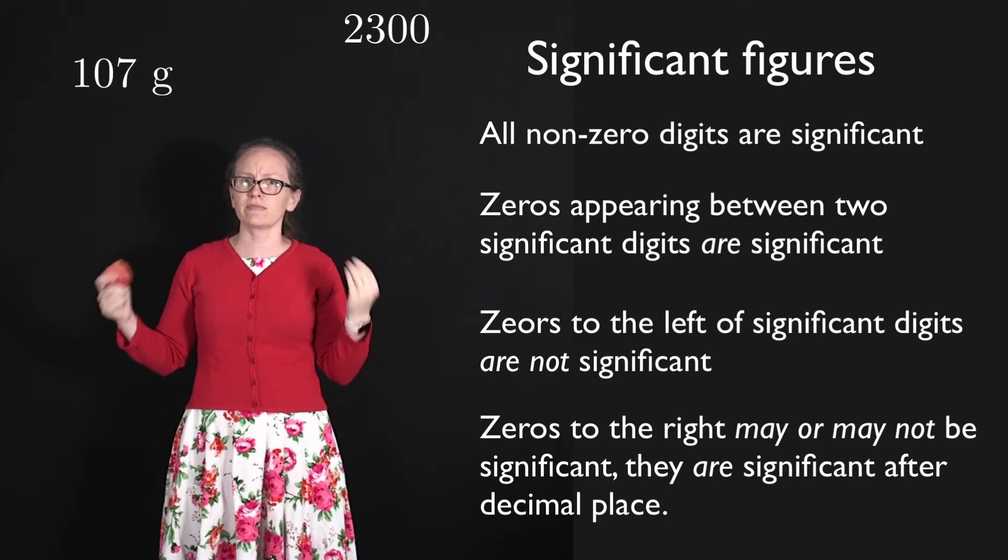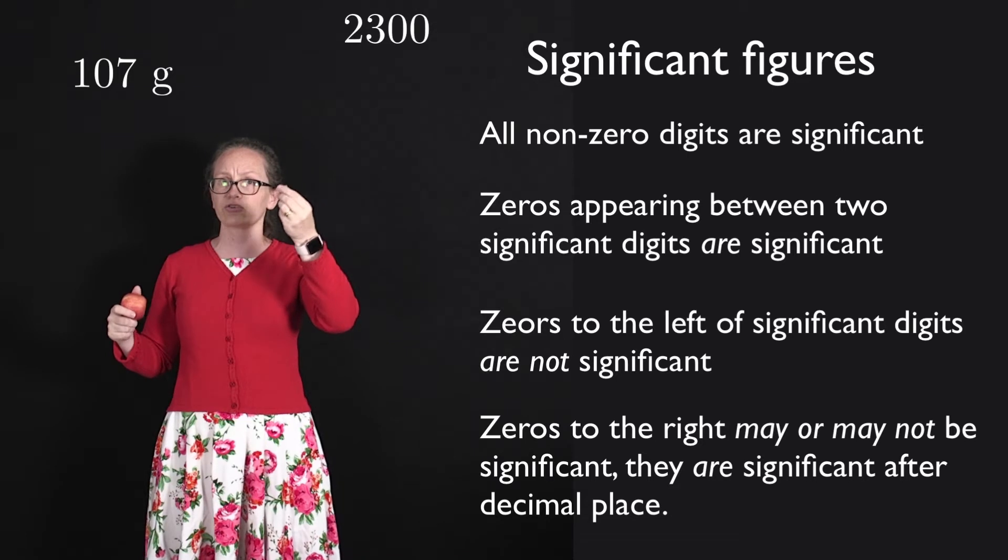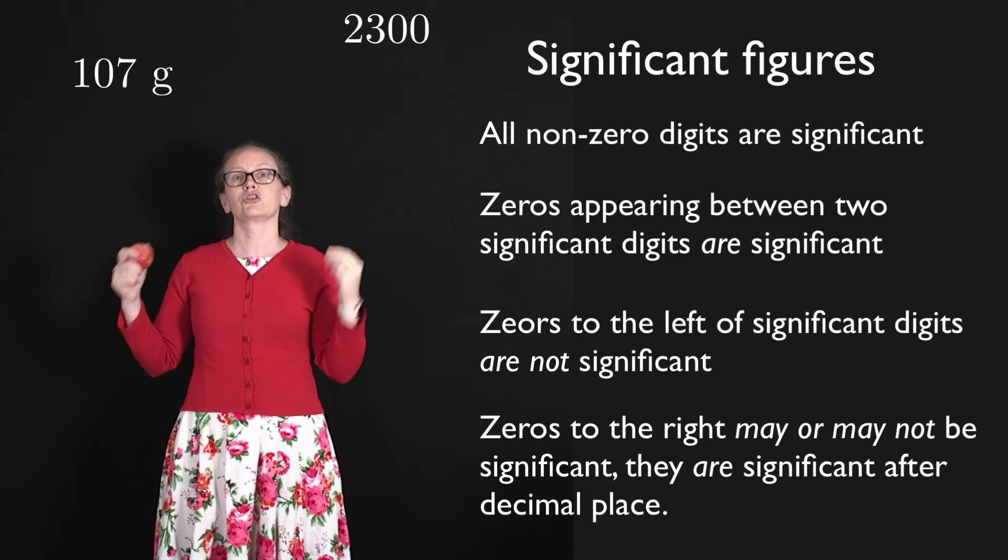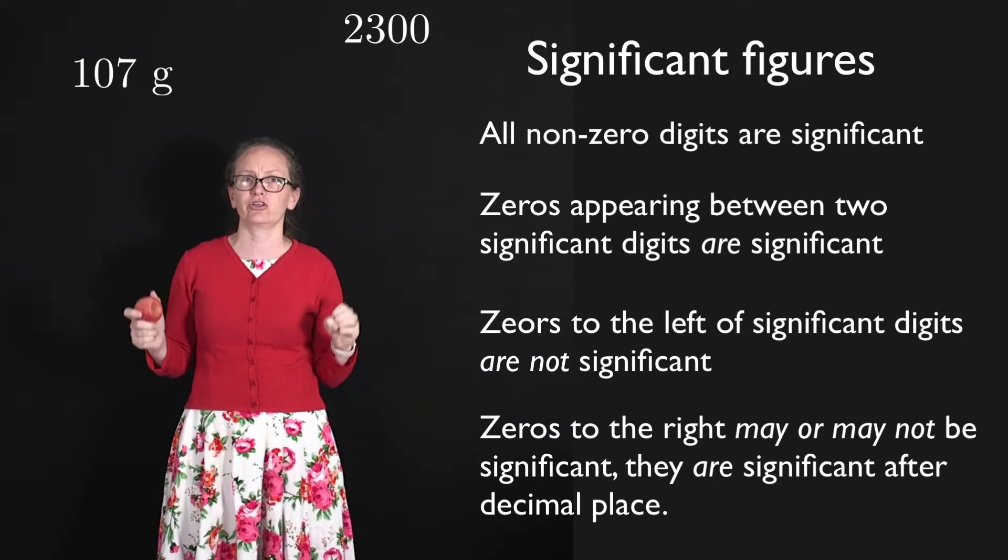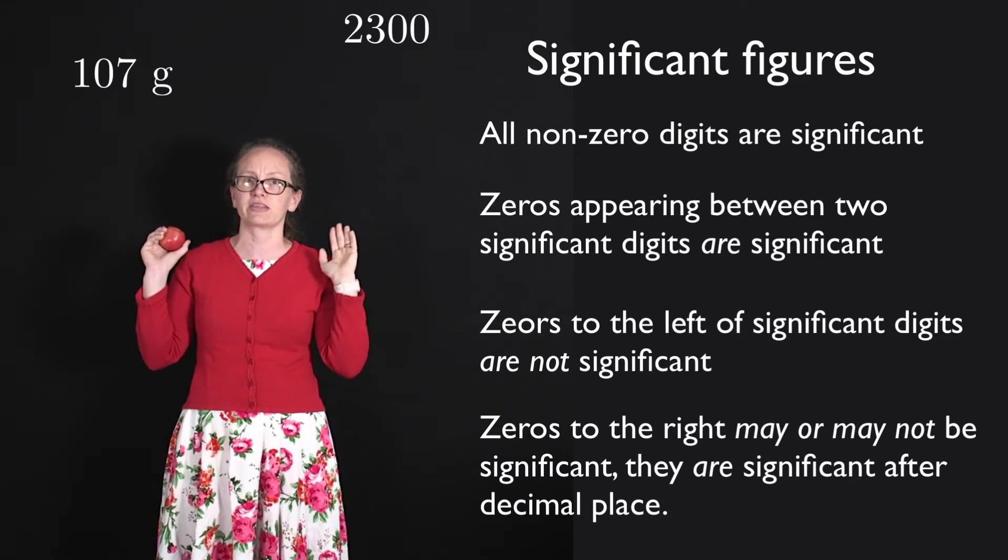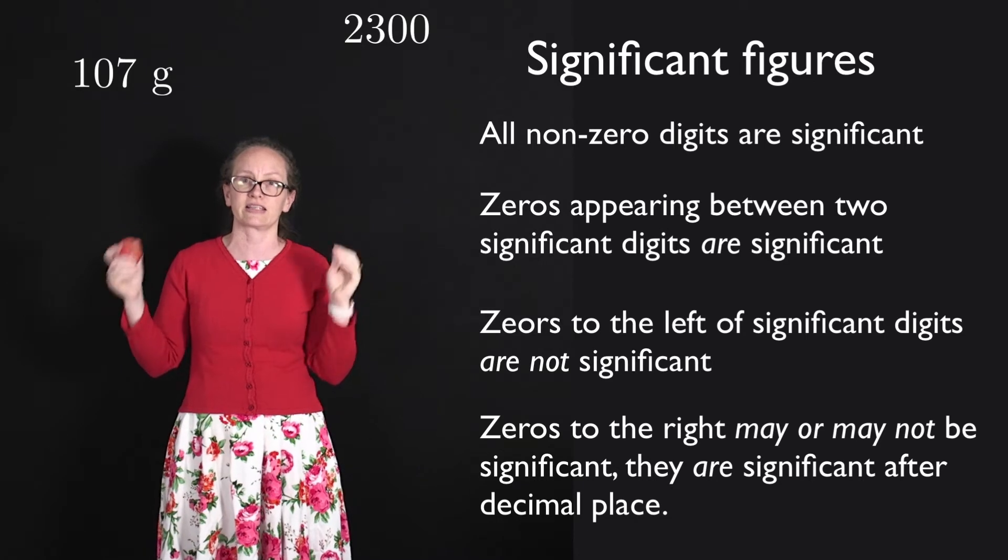So in this course, assume that a number such as 100 can have one, two or three significant figures. There are some conventions that you can use which indicate whether the zeros are significant or not.